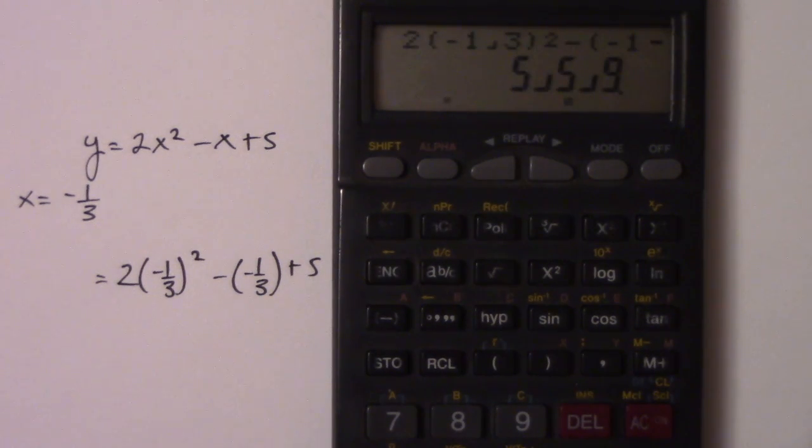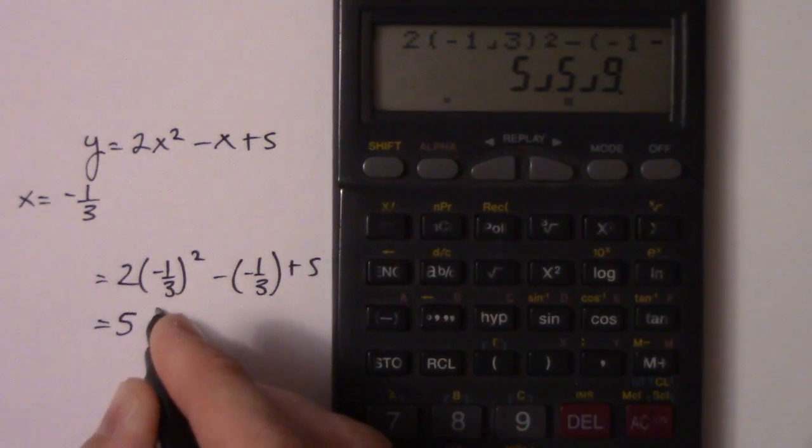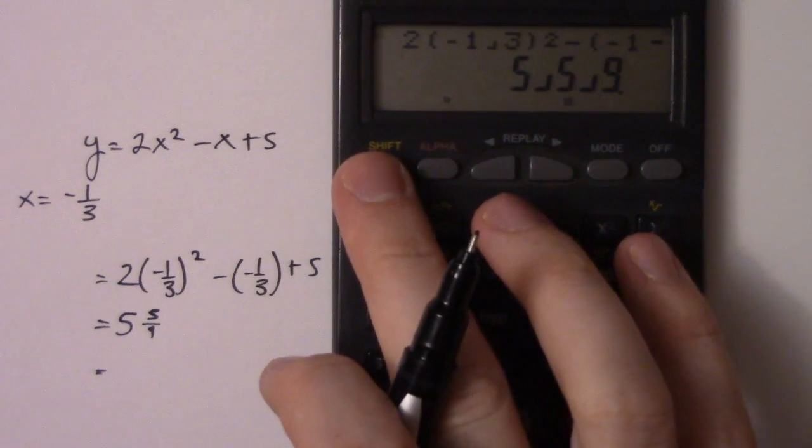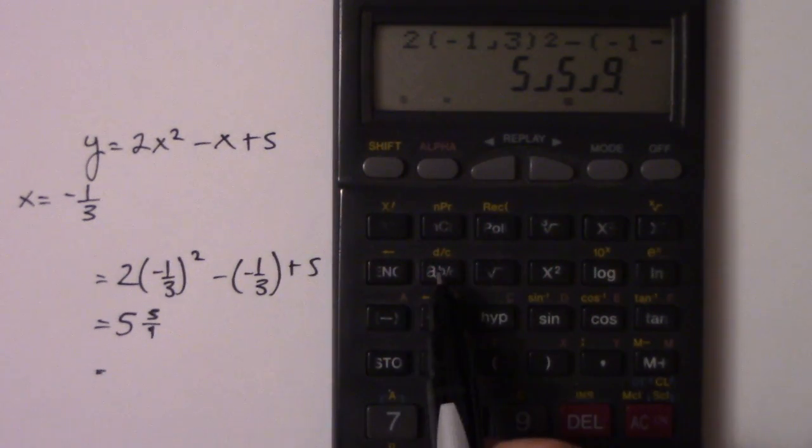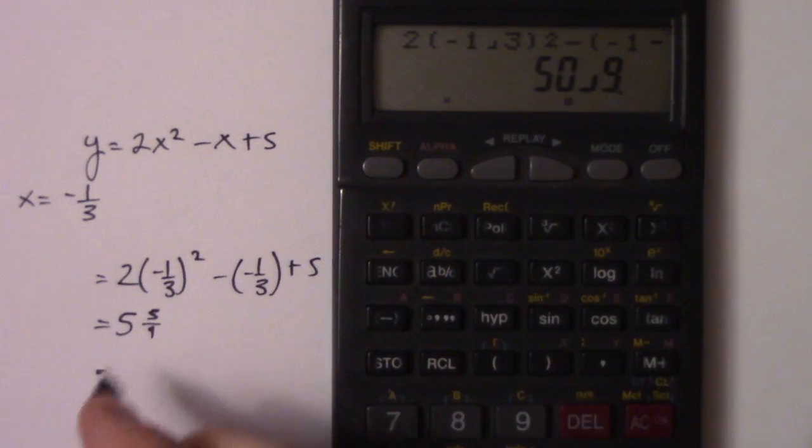And it shoots me back a number. What that number means is five and five over nine. Now, most people don't want it like that, so I'll press Shift. You can see the second function part says d over c. So that's just going to change it to an improper fraction, which is 50 over 9.